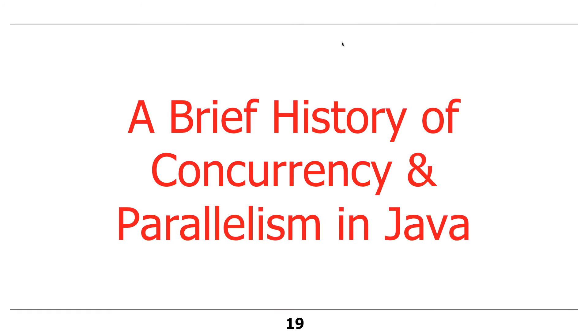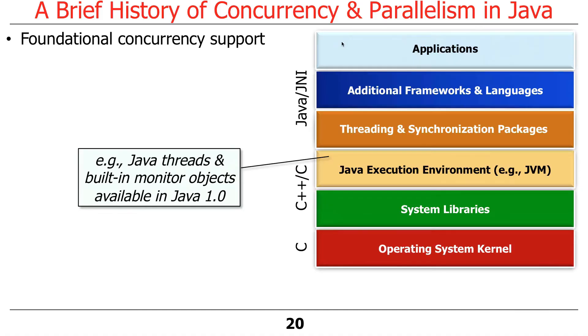The key thing to remember — and it's a great quiz question — is how you differentiate concurrency and parallelism. Let's now talk about the history of these features in Java.